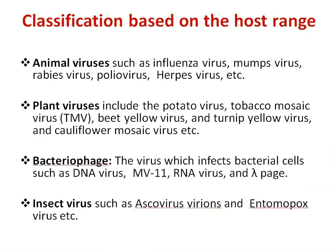The next classification is based on host range. Four types of viruses are identified: animal viruses, plant viruses, bacteriophages, and insect viruses. Animal viruses include influenza virus, mumps virus, rabies virus, poliovirus, and herpes virus. Plant viruses include tobacco mosaic virus, beet yellow virus, cauliflower mosaic virus, and others. Bacteriophages are viruses that infect bacterial cells, such as lambda phage. Insect viruses are viruses that infect insects, such as entomopoxvirus.